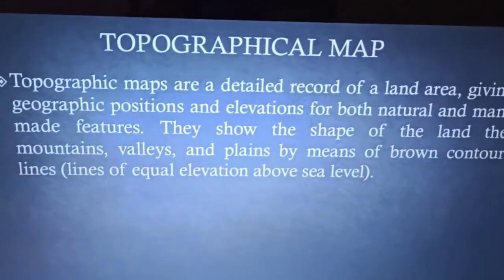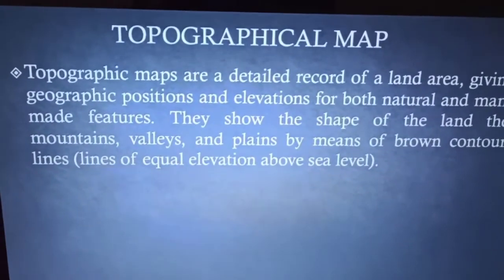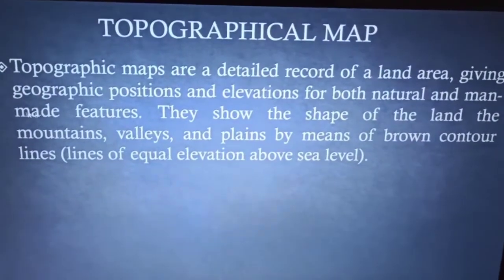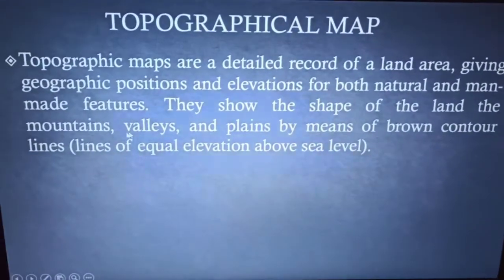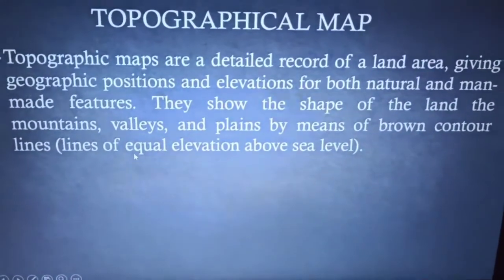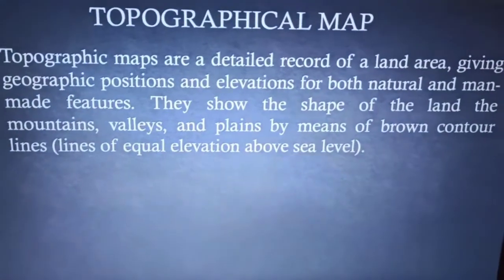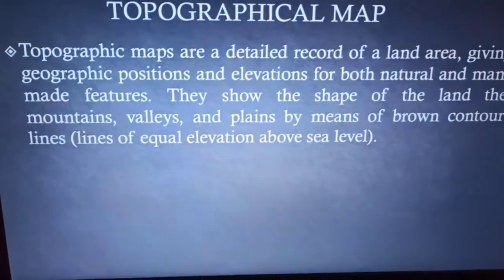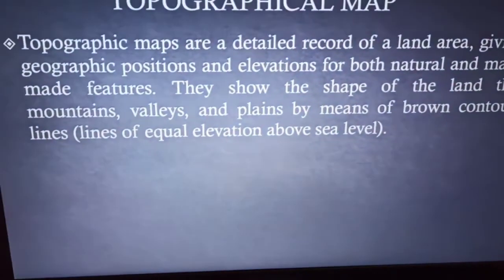Topographical maps show the shape of the land — mountains, valleys, and plains — by means of brown-colored contour lines. These are lines of equal elevation above sea level. We can identify the elevations of any place on the earth with the help of these contour lines.